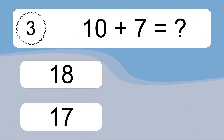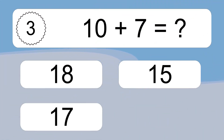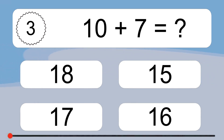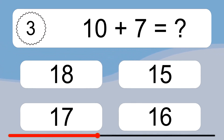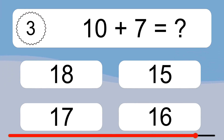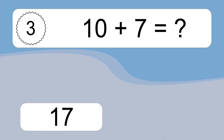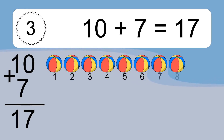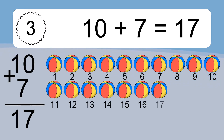10 plus 7 equals what? 10 plus 7 equals 17.